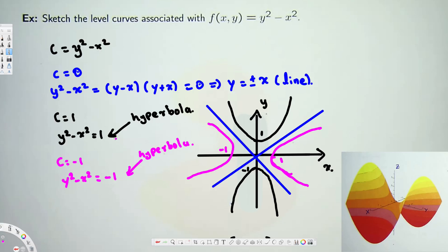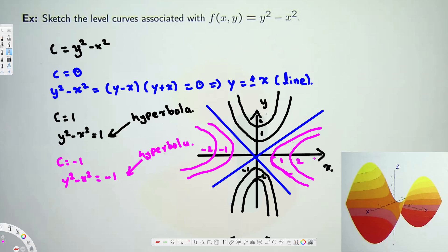If we have C = 2, we get a hyperbola one unit further out, with vertices at y = ±√2. Similarly for C = 3 and so on. For the negative values, C = -2 gives a hyperbola opening left and right, and C = -3 goes even further. That's how we sketch the level curves for a multivariable function. I hope you find this video helpful — see you next time.